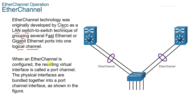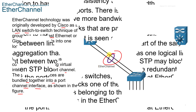When an EtherChannel is configured, the resulting virtual interface is called a port channel. The physical interfaces are bundled together into a port channel interface. So when you're looking at Packet Tracer and you see the little purple circle, that is the EtherChannel.